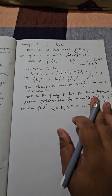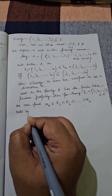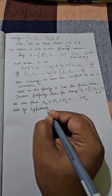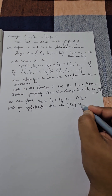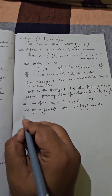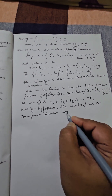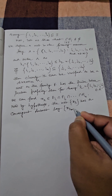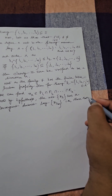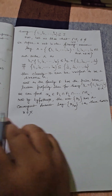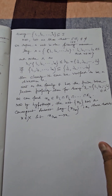By hypothesis, the net x_λ has a convergent subnet — call it x_{λ_m} — meaning there exists x belonging to X such that x_{λ_m} converges to x.